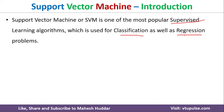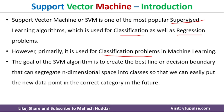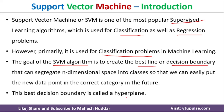Usually SVM algorithms are used to solve classification problems in machine learning. The goal of the SVM algorithm is to draw a decision boundary to segregate the dataset into multiple classes. Once you draw that decision boundary, you should be able to classify new examples into one of the classes. This decision boundary is called a hyperplane in SVM.